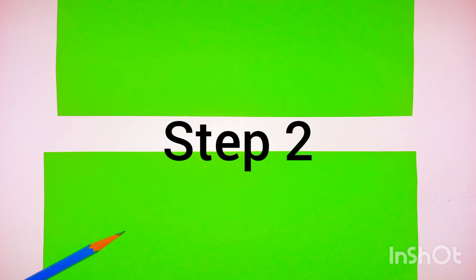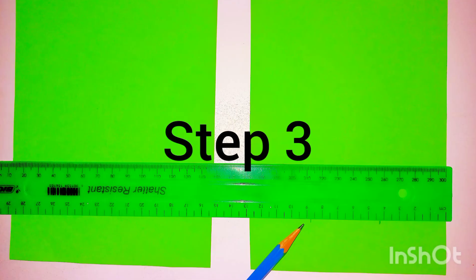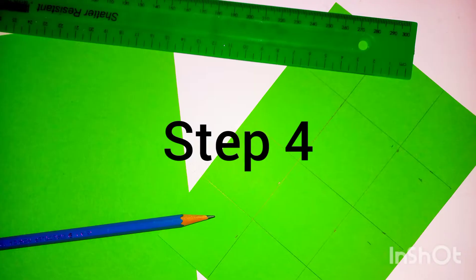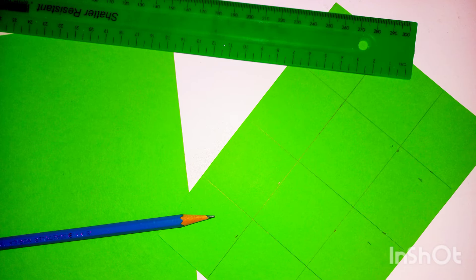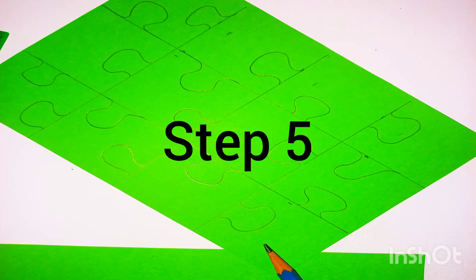Now turn the picture over so you can draw the puzzle pieces. Now you have to first decide how many pieces your puzzle will have. Now we draw equal size blocks using a pencil and a ruler. I will be making a 12 piece puzzle.